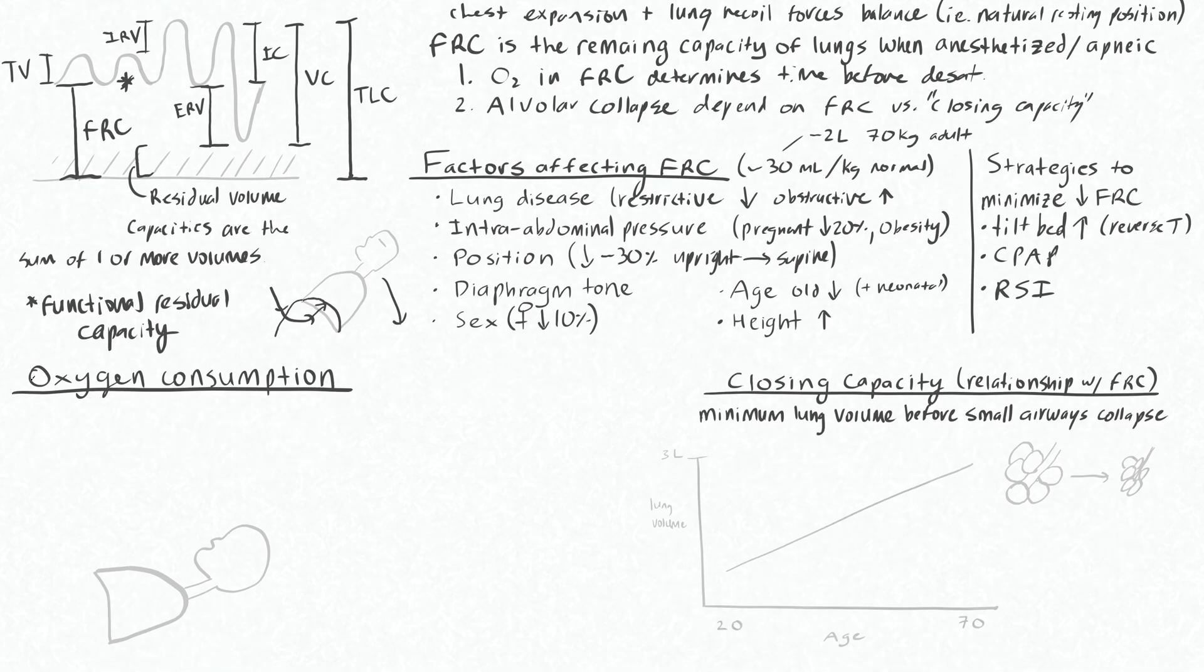Your oxygen consumption relates to how much time you have before you desat, given a certain amount of oxygen in your FRC. So typically there's about 200 to 300 mls per minute of O2 consumed at rest for an average sized adult.